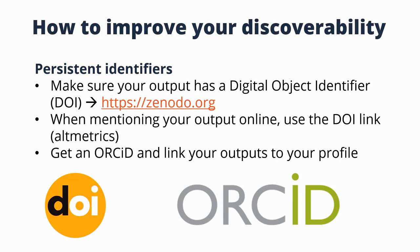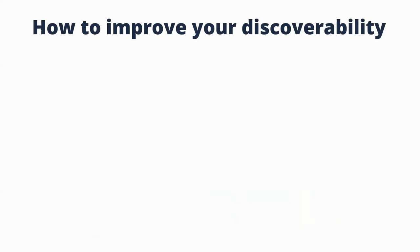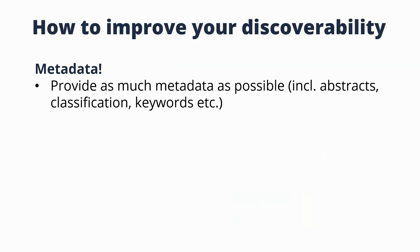I would highly suggest getting an ORCID and linking your outputs to your profile. The second point is about metadata — the data about your output is often more important than the content itself. Provide as much metadata as possible. If asked for an abstract, provide one. If they ask for keywords or classification, spend a few minutes adding that information — it makes it much easier for automated systems to process your outputs and present them better to users.